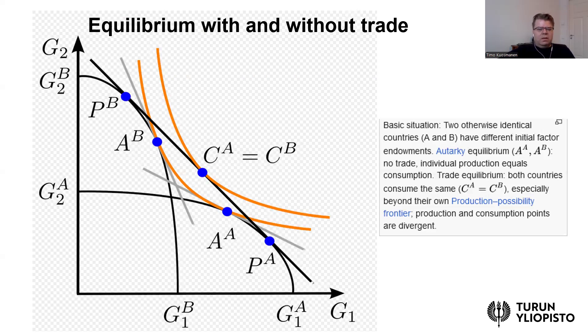So the prices differ in these two countries in the absence of trade, if there would be huge tariffs or the transport costs were extremely high. So then let's consider the possibility what happens when we open up for trade, for example we lower the tariffs or the transport costs decrease.